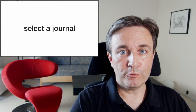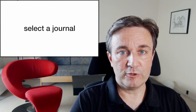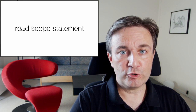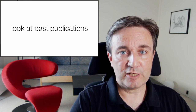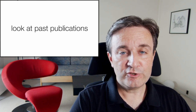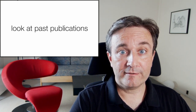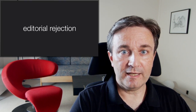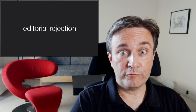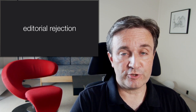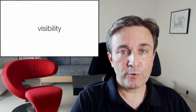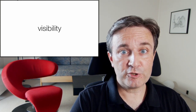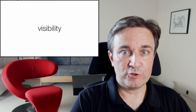The first step in getting your work published in a journal is to select a journal to submit it to. Be realistic. Read the scope statement of the journal, and look at the past publications from the journal. Does this journal publish the kind of work that you're about to submit to it? If not, it's a certain way of getting a quick editorial rejection without any input from reviewers, and you've simply wasted your time. You also want to think about visibility — will people be able to find your work where you're about to publish it?